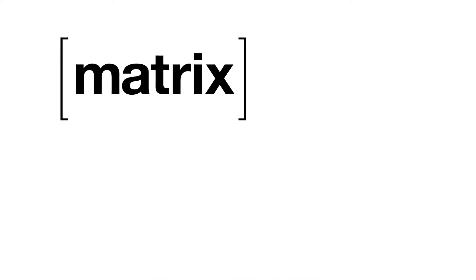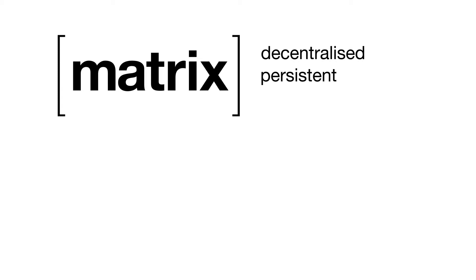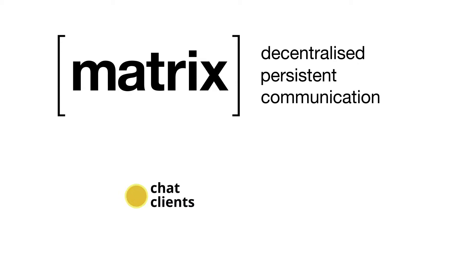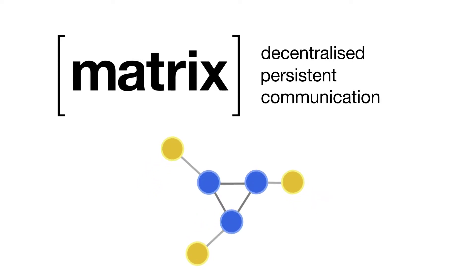Matrix is an open standard for decentralized persistent communication over IP. You can use Matrix for decentralized group chat, VoIP signaling, Internet of Things data transfer, or just about anywhere you need a common data fabric to link together fragmented silos of communication.